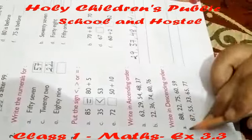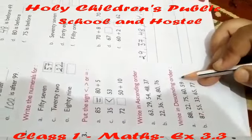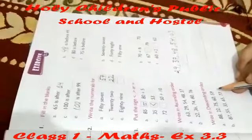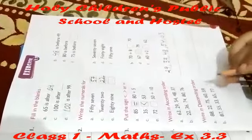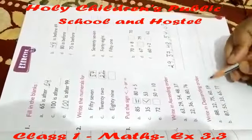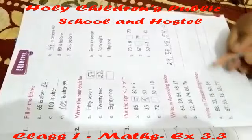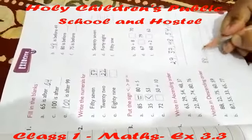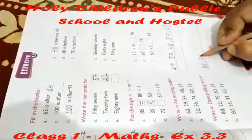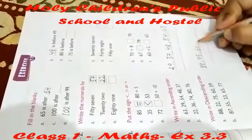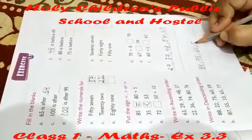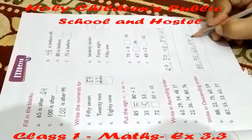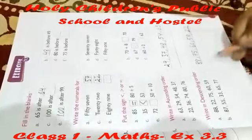Question number 5 is write in descending order. Descending means bigger to smaller in order. We compare the numbers. 88 is the greatest one, so we write 88 first, then 75, then 60, then 59, and at last 22. 22 is the smallest one.